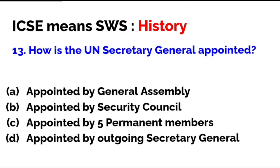How is the UN Secretary General appointed? Is he appointed by the General Assembly, the Security Council, only the five permanent members, or by the outgoing Secretary General? The correct answer is: he is appointed by the General Assembly. The Security Council also gives its opinion, but the actual appointment takes place by the General Assembly.